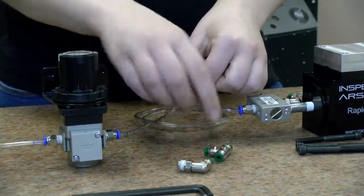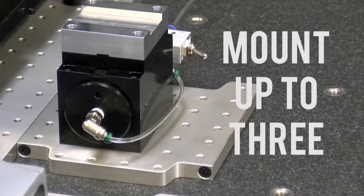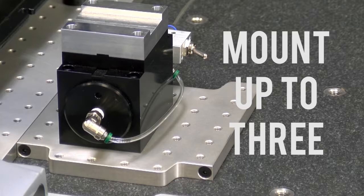This allows for multiple parts or operations to be checked simultaneously with a few quick switches. Mount up to 3 vises to a 6 by 18 lock and load plate and you're good to go.